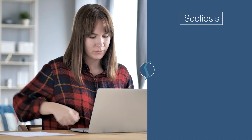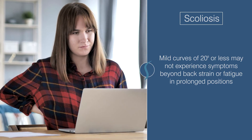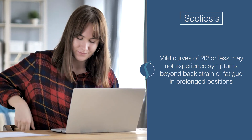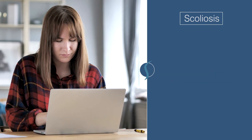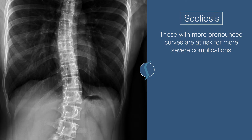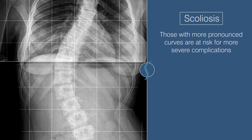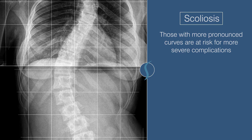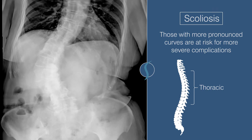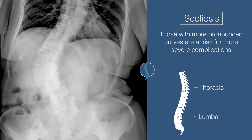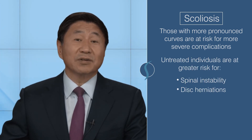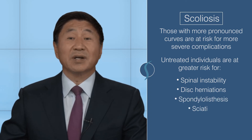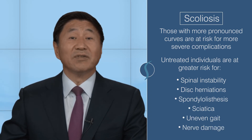The earlier you treat scoliosis, the better the outcome. Mild curves of 20 degrees or less may not cause symptoms beyond some back strain or fatigue in prolonged positions. Those with more pronounced curves are at risk for more severe complications, particularly patients with curves of 50 degrees or more in the thoracic region and 40 degrees in the lumbar region. Left untreated, individuals are at great risk for spinal instability, disc herniations, spondylolisthesis, sciatica, uneven gait, and even nerve damage.